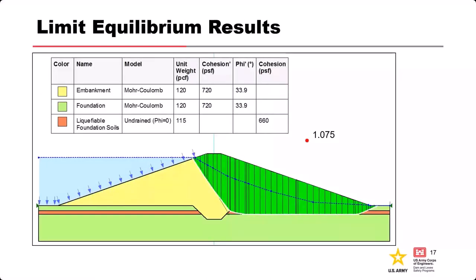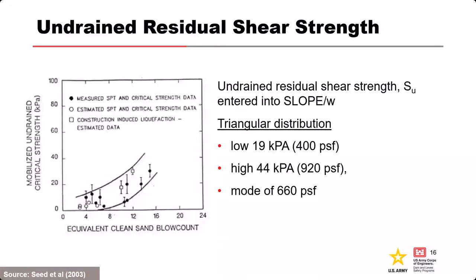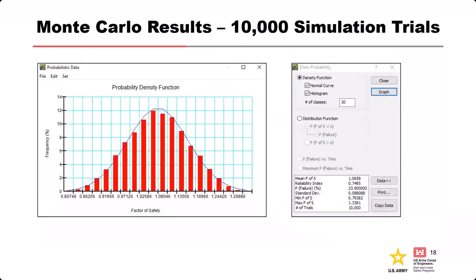If we just ran one single stability analysis using our mode value, we get a factor of safety of 1.075. Does that mean it's 100% stable? Would you say the likelihood of slope instability is virtually impossible? It's hard to tell — at 1.075, that's a pretty thin line. So let's run a Monte Carlo analysis utilizing the range from 460 to 920. Here are the end results — you can watch the histogram bars charge up as the tool runs individual analyses, probably around 10,000 iterations, randomly selecting from input distributions.